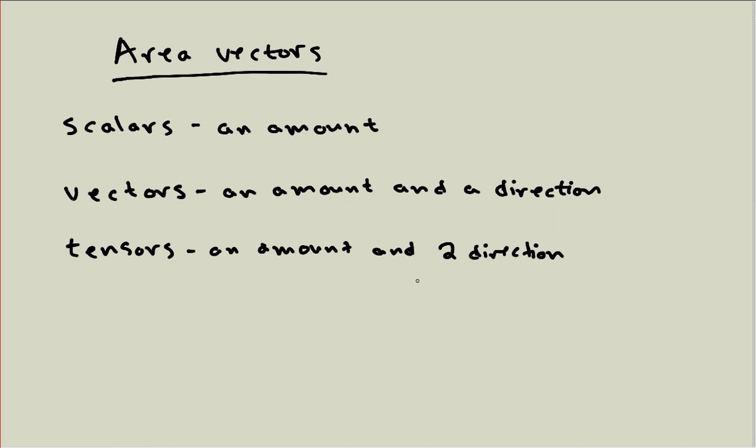Okay so the idea behind area vectors is we have an area, just an ordinary two-dimensional shape let's say a rectangle like this which I'm drawing in perspective. And this shape we could represent with an area, so if I just gave you an area scalar, then we could represent that as just being the length times the width being equal to that area scalar. That's the normal way to think about area.